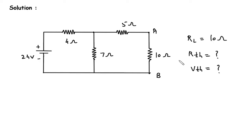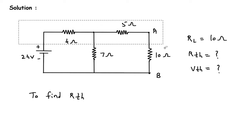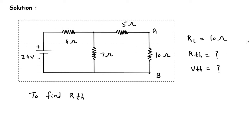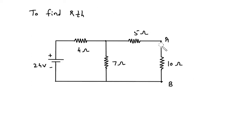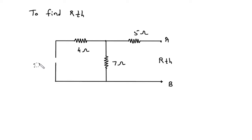First we will find RTH. To find RTH, we have to turn off the sources. This voltage source will be replaced by its internal resistance, so it will be short circuited.